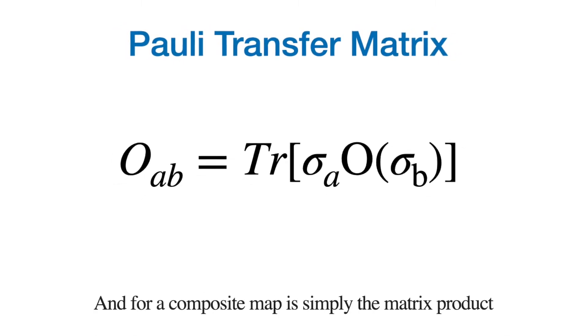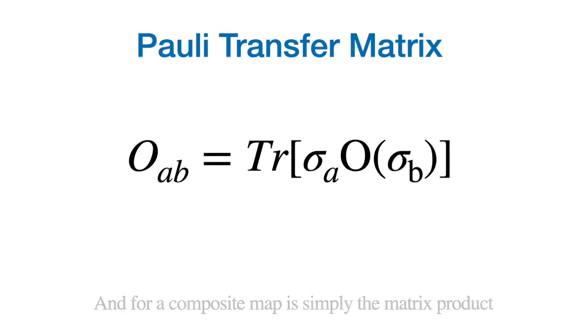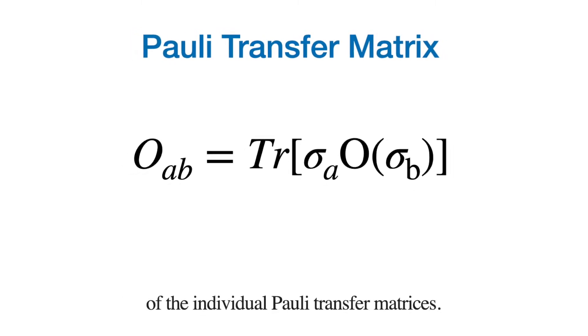And for a composite map, it is simply the matrix product of the individual Pauli transfer matrices.